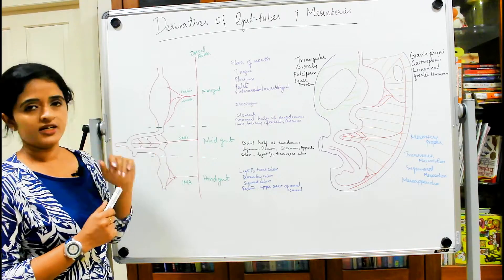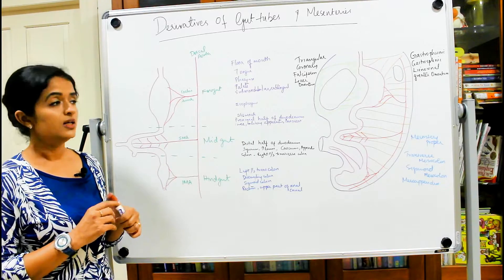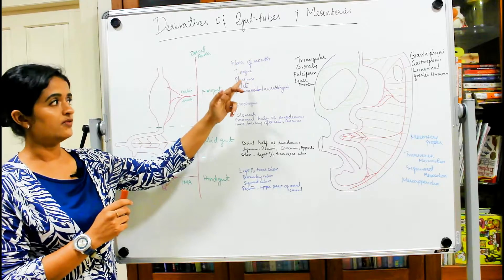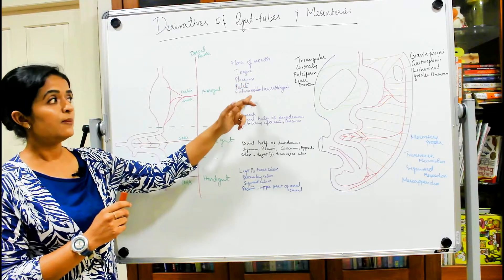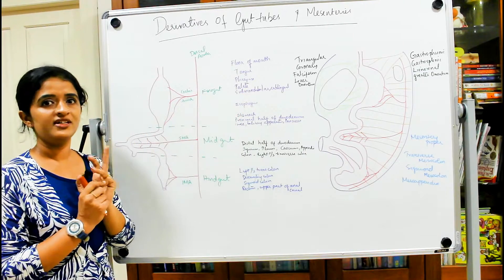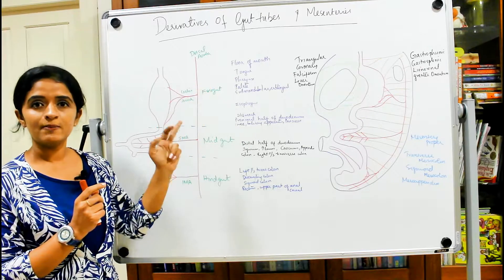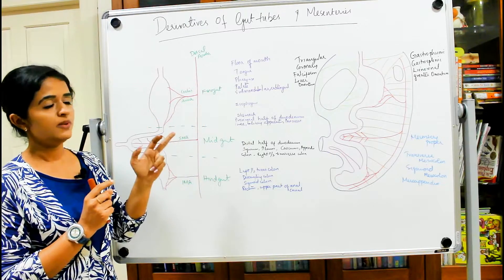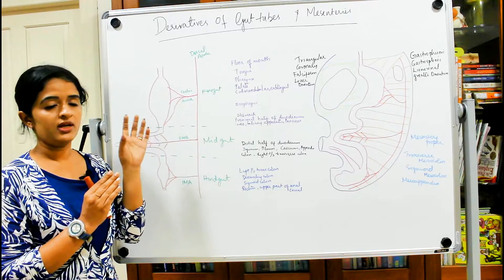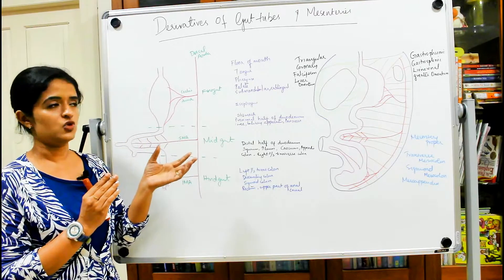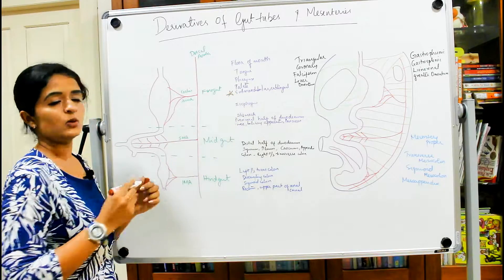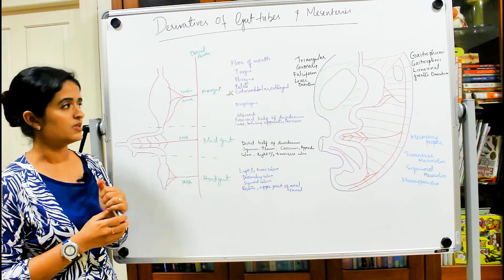Foregut derivatives include the floor of mouth, tongue, pharynx, palate, submandibular and sublingual salivary glands. Note that the parotid gland is not mentioned — parotid is not a derivative of the endoderm. It is ectodermal in origin. That is an important point to remember, as it is a favorite MCQ question in entrance exams.